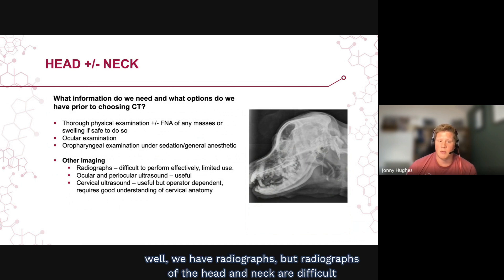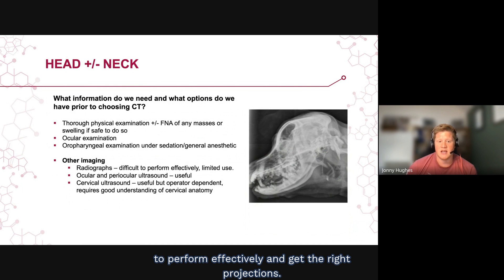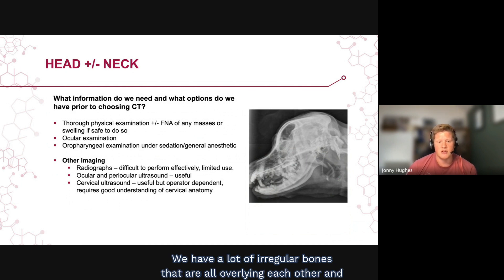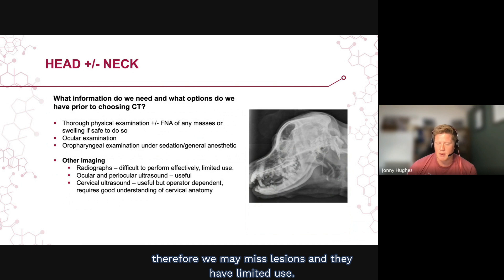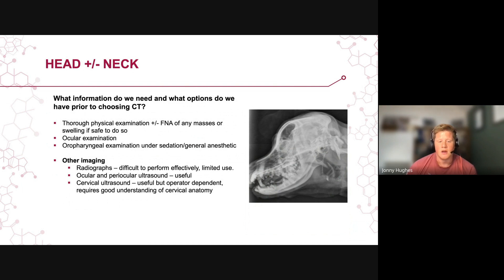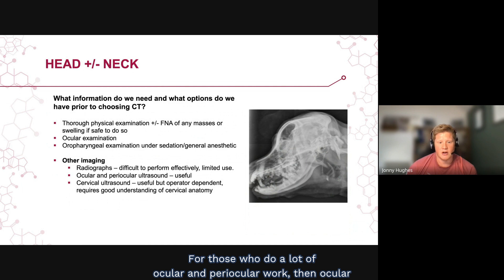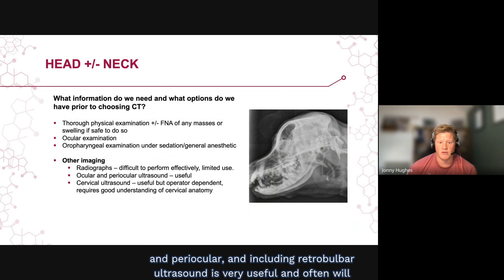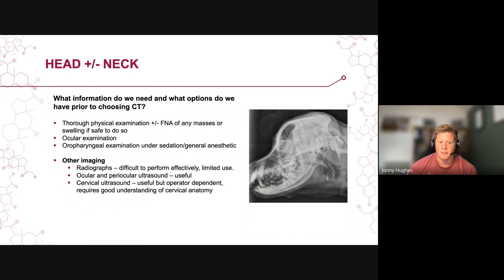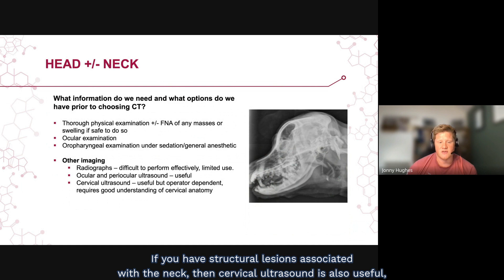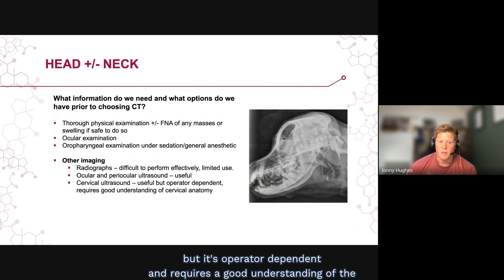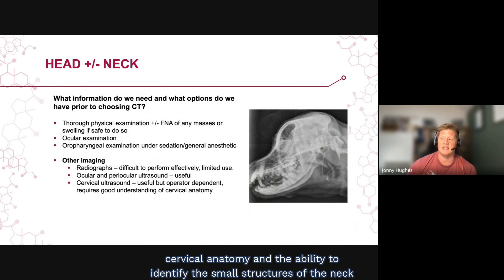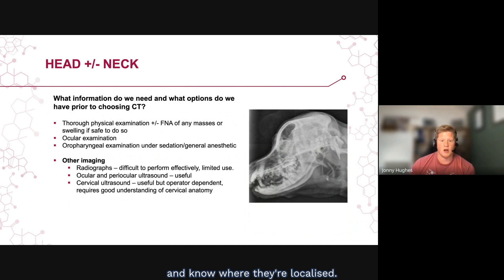Other imaging modalities available to us include radiographs, but radiographs of the head and neck are difficult to perform effectively and get the right projections. We have a lot of irregular overlying bones, so we may miss lesions and they have limited use. For ocular and periocular work, retrobulbar ultrasound is very useful and often the first-line modality. For structural lesions of the neck, cervical ultrasound is also useful, but it's operator dependent and requires a good understanding of cervical anatomy.